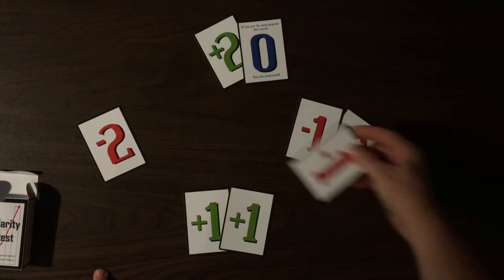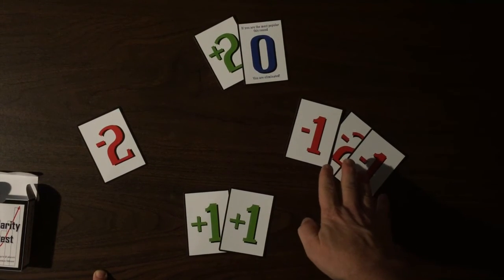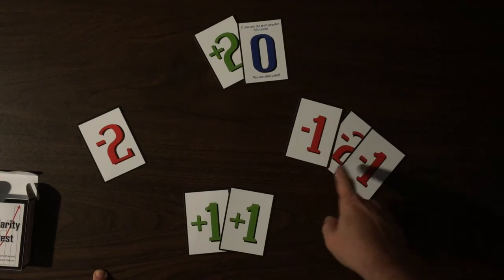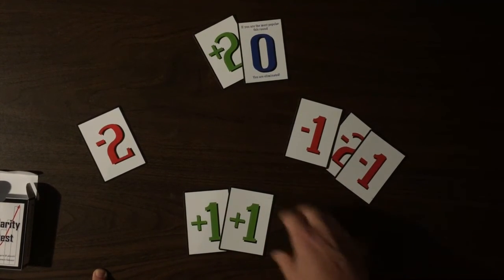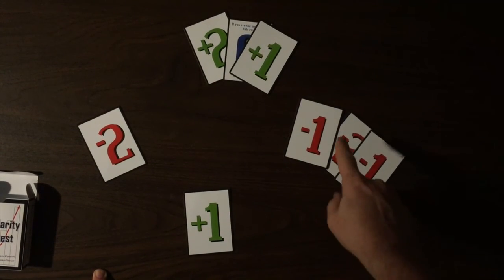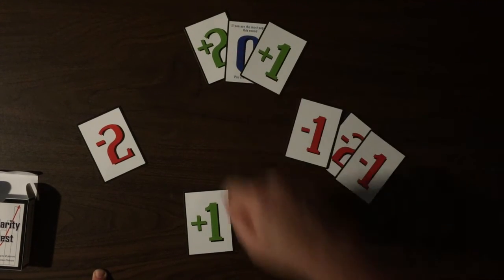Now, if the situation would have been like this, where this player has negative four popularity, this player has negative two popularity, then this player would be eliminated. In a situation like this, both of these players would be eliminated because this person is the least popular, and this person is the most popular, but they have the zero.